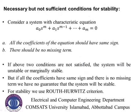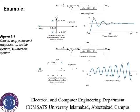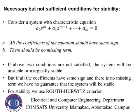In general, all coefficients of the characteristic polynomial should have the same sign, and there should be no missing terms. If you have a term like s minus 2, equating s plus 2 equal to zero gives s equal to plus 2, which is on the right half plane. If these two conditions are not satisfied, the system will be unstable or marginally unstable. These are necessary conditions for stability.